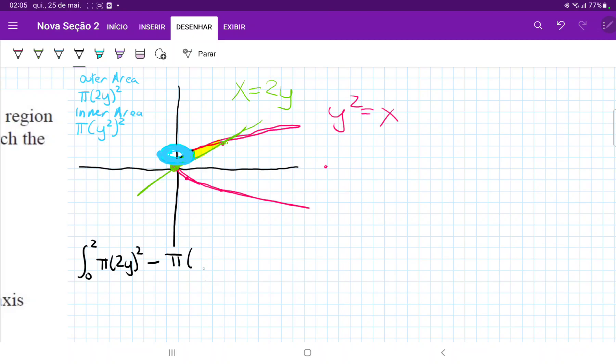Sorry, pi times y squared squared, which is equal to the integral. We're going to remove pi outside because it's a constant, 0 to 2.